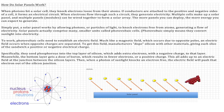So put simply, a solar panel works by allowing photons, or particles of light, to knock electrons from the atoms, generating a flow of electricity.